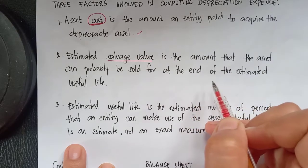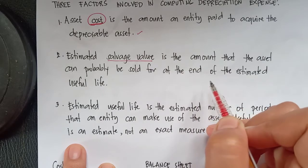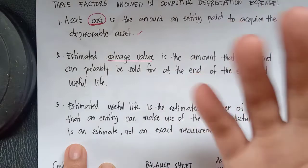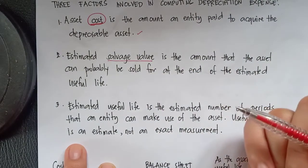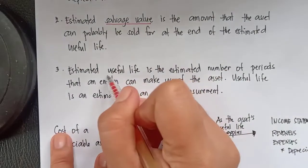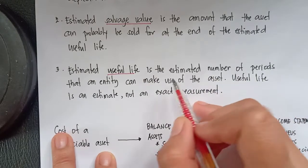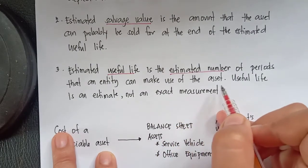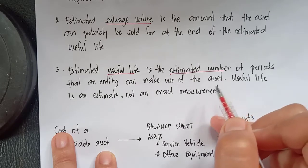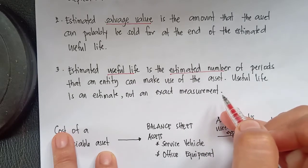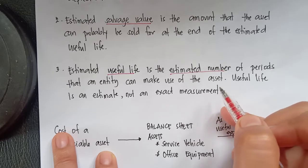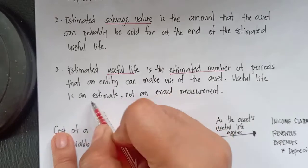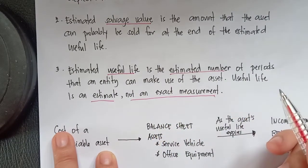There is a salvage value because it is the value or amount that the asset can probably be sold for at the end of its estimated useful life. Third is the estimated useful life. When we say estimated useful life, it is the estimated number of periods that an entity can make use of the asset — in other words, how many years the entity can use a depreciable asset. Useful life is an estimate and not an exact measurement.